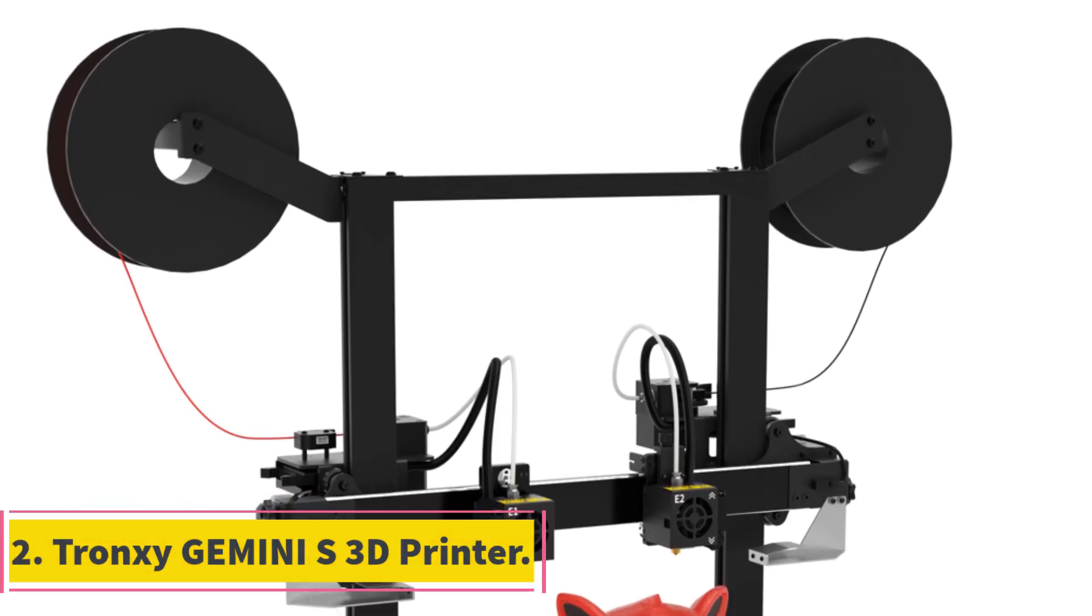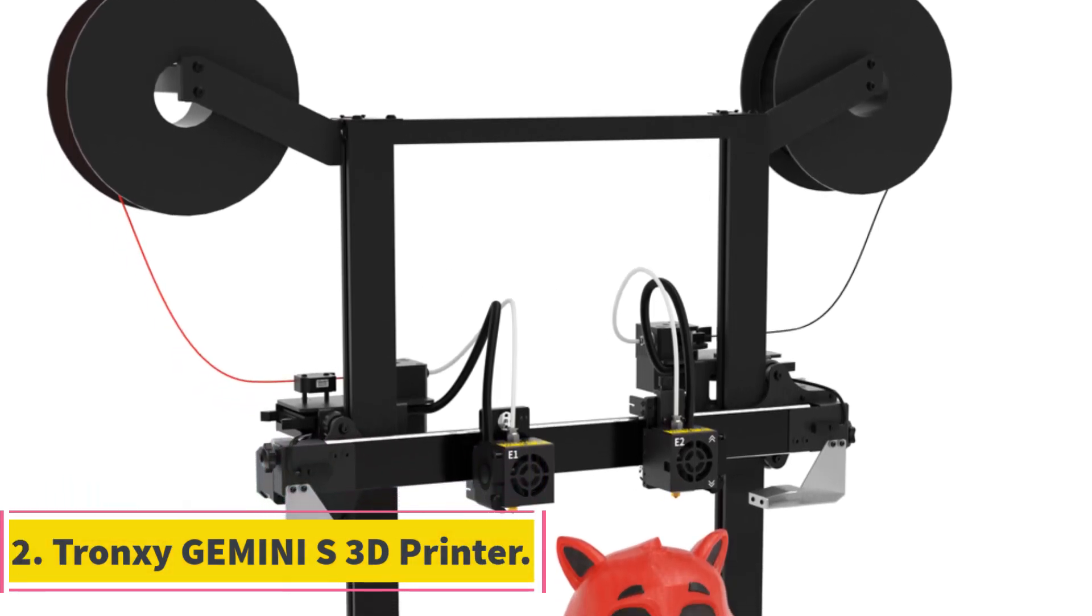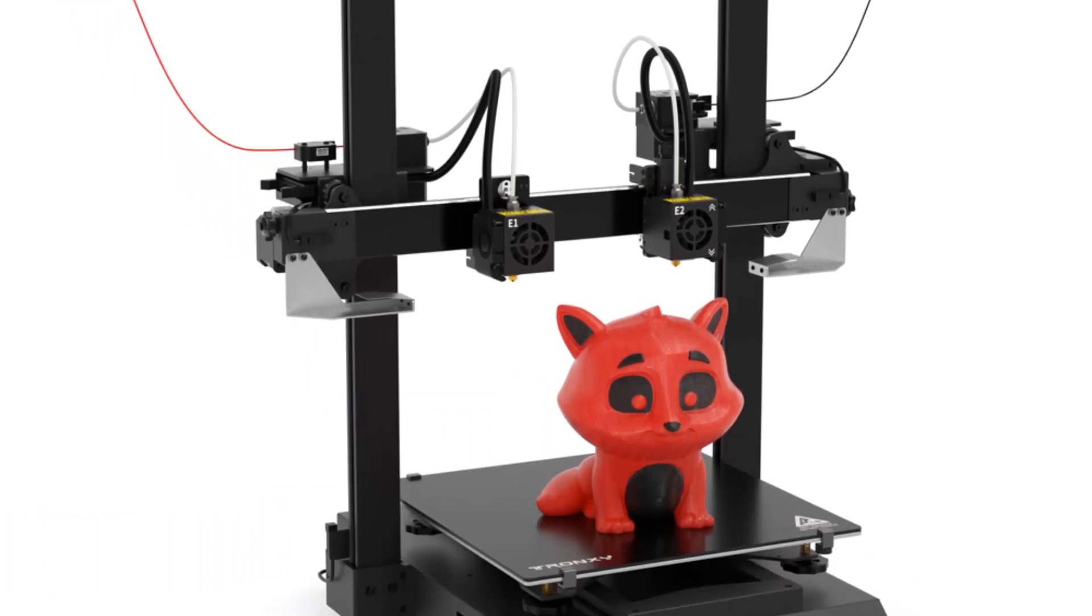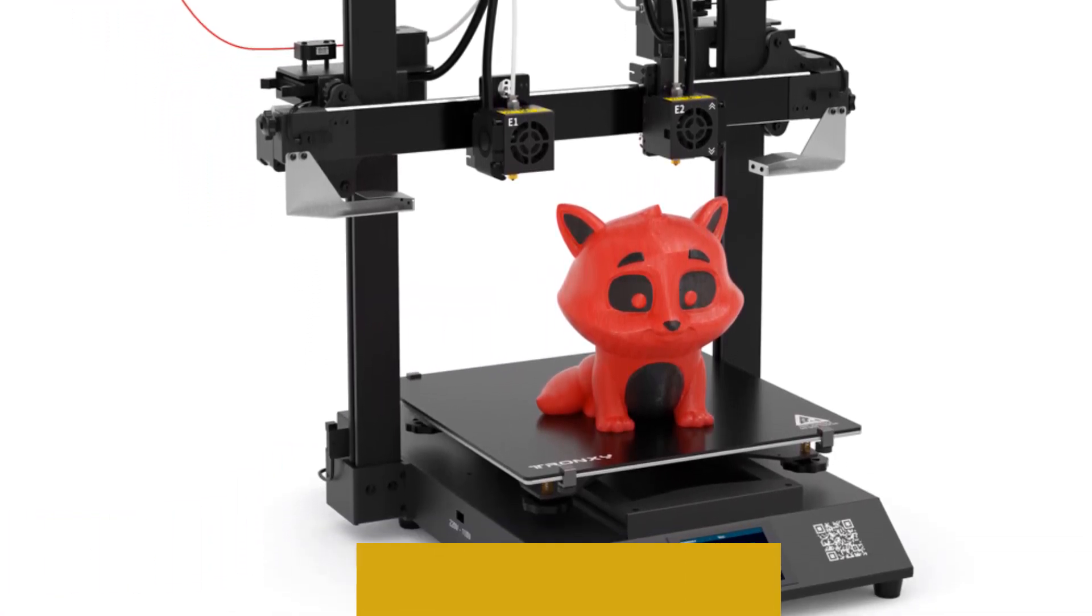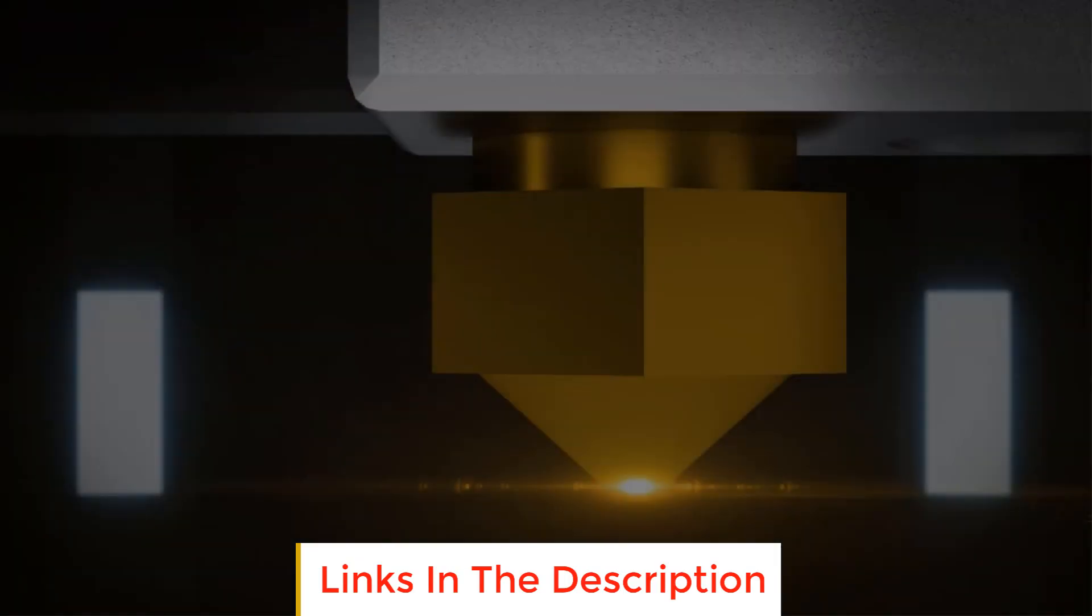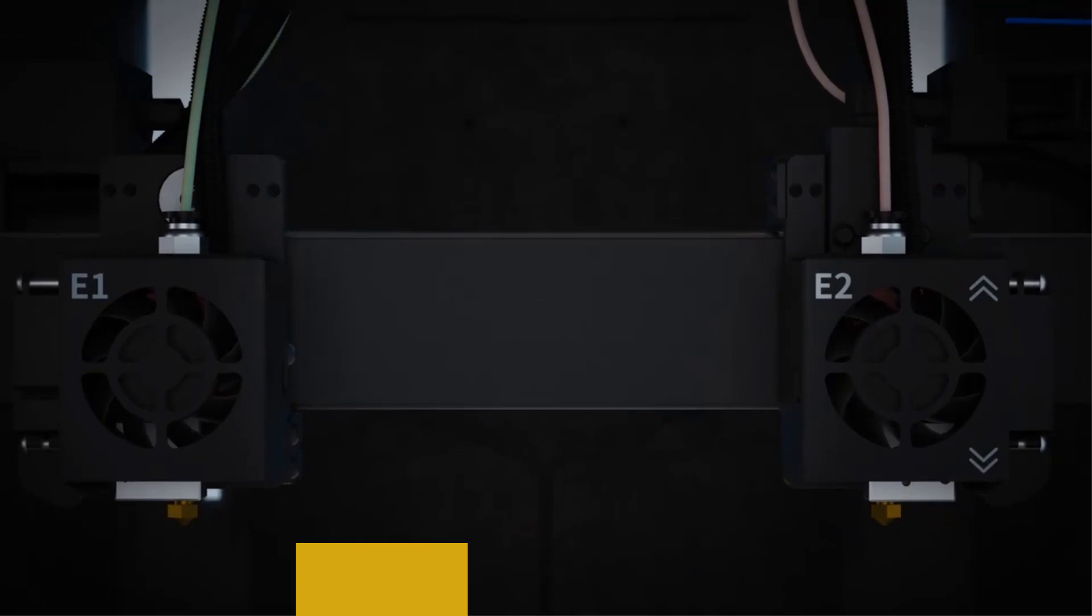Number 2: Trincy Gemini S 3D Printer. The Trincy Gemini S 3D Printer is a large FDM fused deposition modeling 3D printing machine that offers a spacious build volume of 300 by 300 by 390 mm.